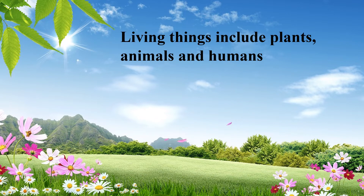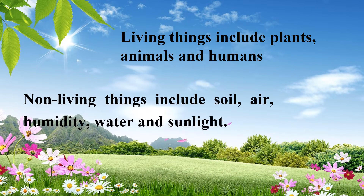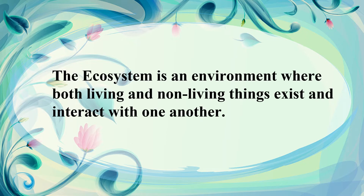An ecosystem is composed of living things and non-living things. Living things include plants, animals, and humans. Non-living things include soil, air, humidity, water, and sunlight. What is an ecosystem? The ecosystem is an environment where both living and non-living things exist and interact with one another.